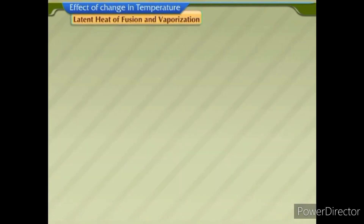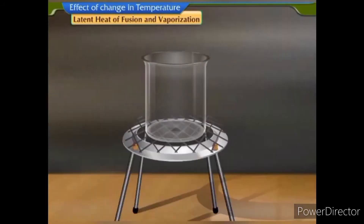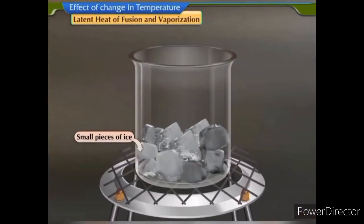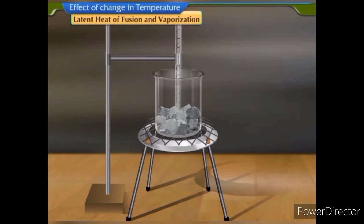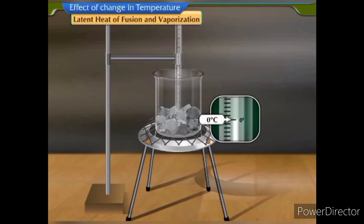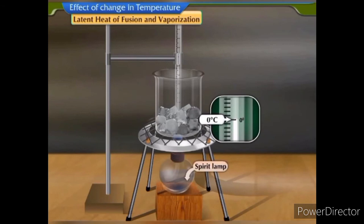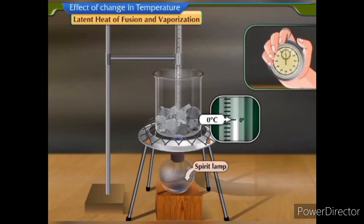Latent heat of fusion and vaporization. Take some small pieces of ice in a beaker. Suspend a thermometer in the beaker to note the temperature of ice — it is essential that the thermometer bulb be fully immersed in ice. The initial temperature of ice, which would be 0°C, is noted. Place the beaker above a spirit lamp and start heating the ice gently and uniformly. Note down the temperature every minute.